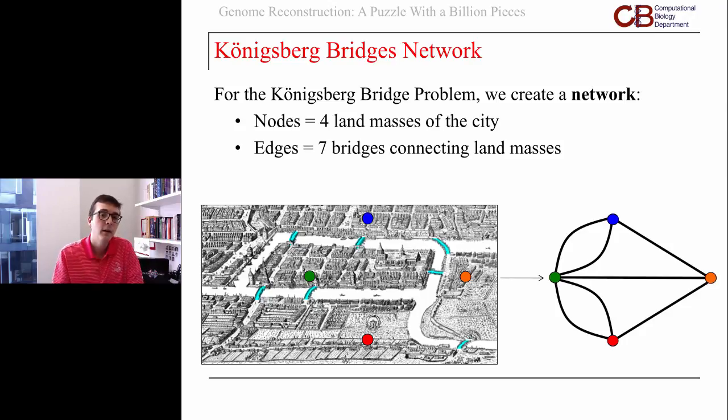We can compress each of those parts of the city down into a point called a node. Then we represent the bridges as segments in a network that connect these nodes. There are two bridges connecting the blue part of the city to the green part, so we represent those as two segments connecting the blue node to the green node and so on.